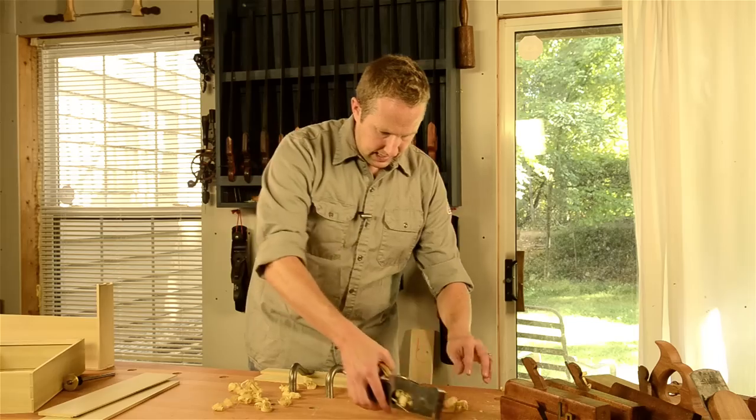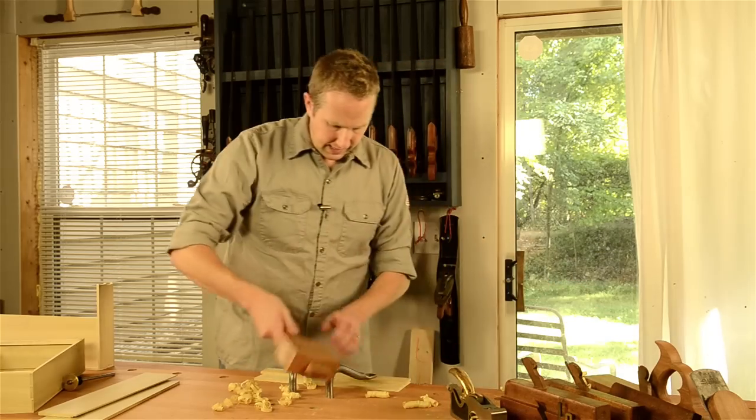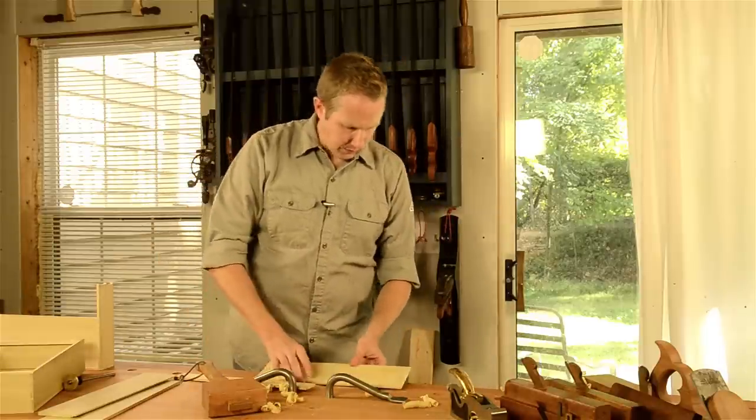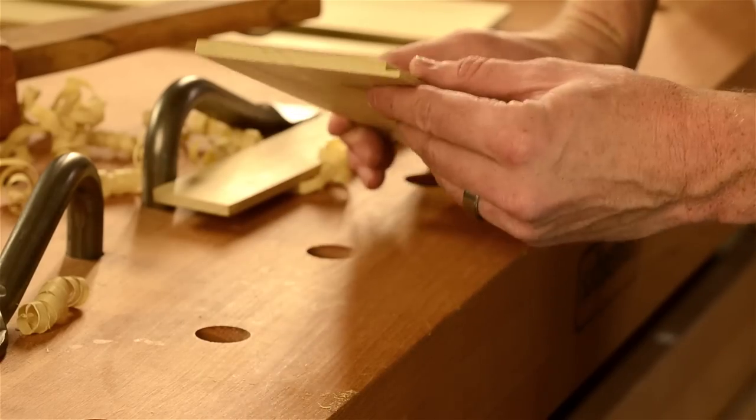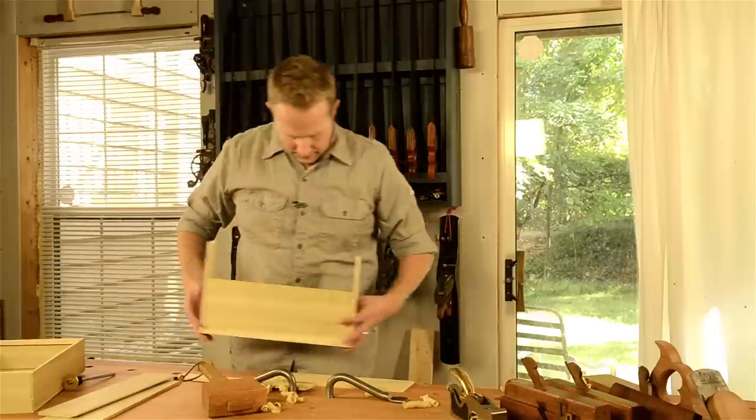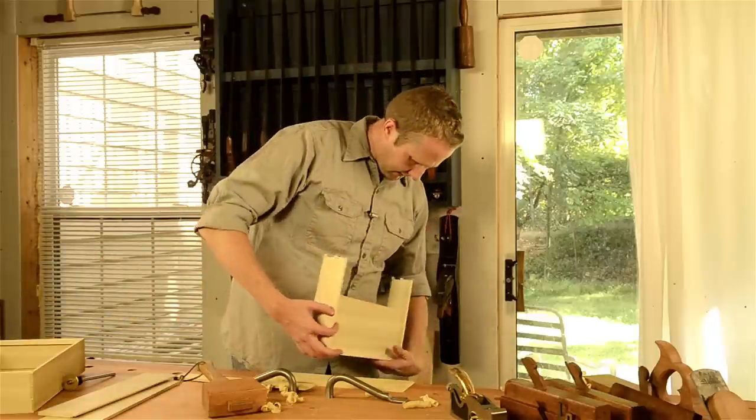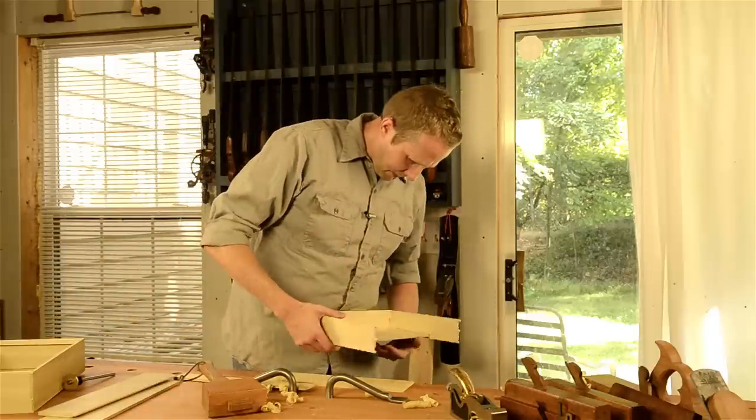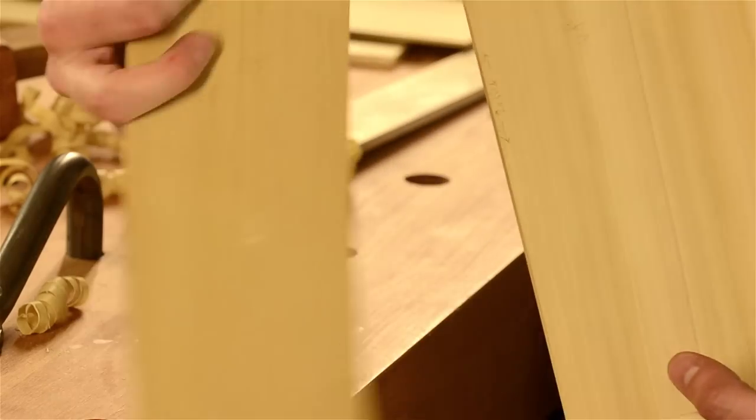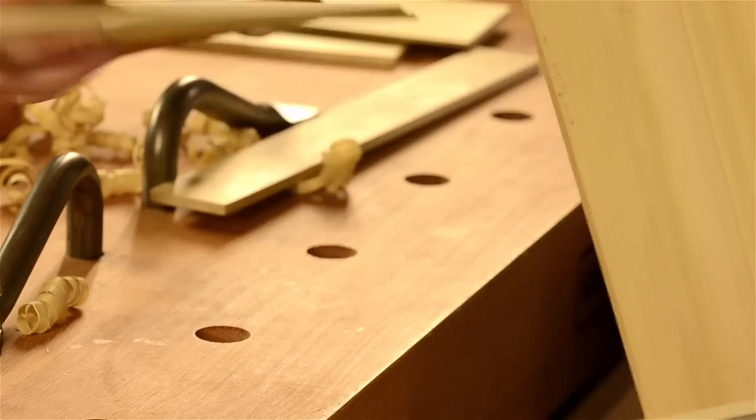I'll take these holdfasts off and you can see the rabbet that I've cut. So what I need to do is find my other piece—you can see it's in here—and I made note of which side I wanted the rabbet to go on each side so they'll go in opposition like that.